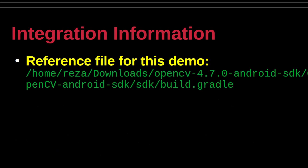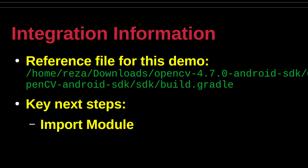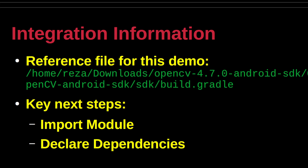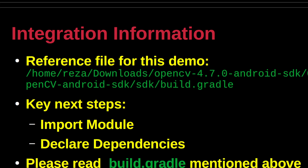The two operations that serve the integration hooks to OpenCV are import module and declare dependencies. The steps to complete these operations are documented in the build.gradle file for the OpenCV SDK for Android. If the graphical user interface to perform these operations proves to be difficult owing to version changes in Android Studio, the documentation provides information on the manual changes that can be used as an alternative method to link the OpenCV SDK to the Android Studio project.